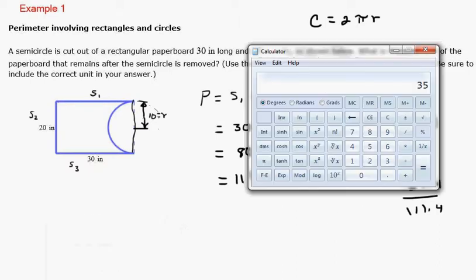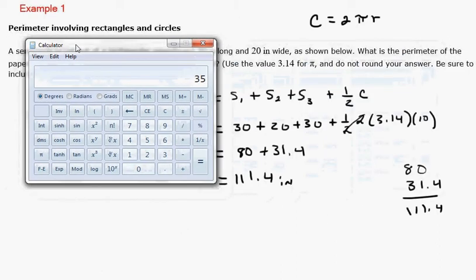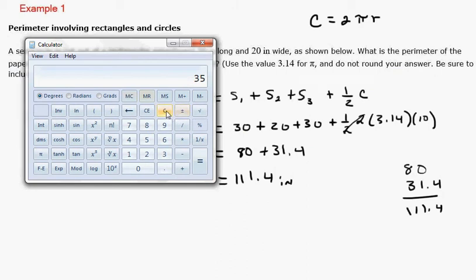Now if you wanted to use the calculator, you can. Let's just do this real quick. Clear. Why don't we do this part first? 2 times 3.14 times 10 equals divided by 2.